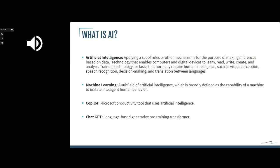One definition is applying a set of rules or other mechanisms for the purpose of making inference based on data — the old concept of algorithms. You have something with a set of rules, it goes through a data set and makes decisions. It's also technology that enables computers and digital devices to learn, read, write, create and analyze, allowing repetitive or time-consuming tasks to move to the technology side, enabling humans to work on things that AI can't do as well.